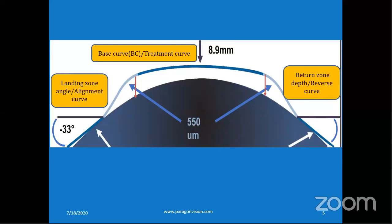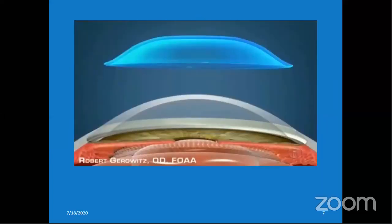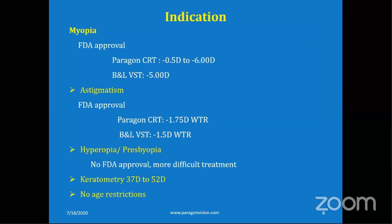The next question from Sachin Sharma: what are the indications and contraindications of ortho-K lenses? It can correct myopia up to 6 diopters and astigmatism up to 1.75 diopters, depending on the product. For Boston Lomb, it corrects up to minus 5 diopters of myopia and up to minus 1.5 diopters of cylinder.